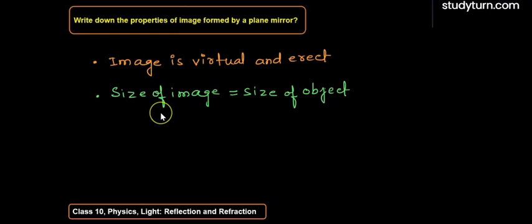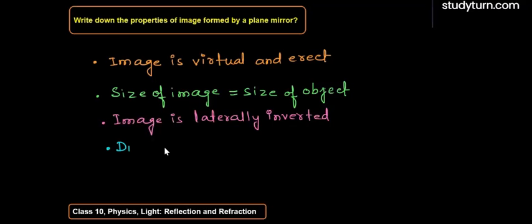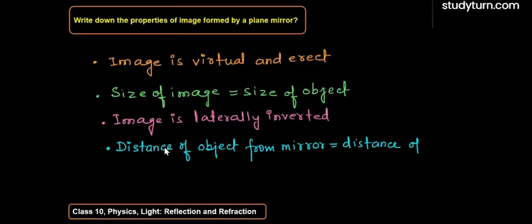Third property is that the image is laterally inverted. Fourth property is that the distance between the image and the object is always the same - that is, distance of object from mirror is equal to distance of image.